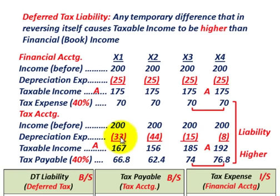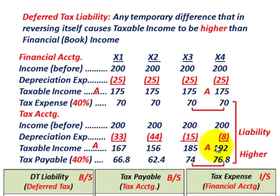Taxable income — income before expenses minus depreciation — comes to $167,000 in year one, $156,000 in year two, $185,000 in year three, and $192,000 in year four. Now for tax payable: in tax accounting, you refer to it as tax payable, versus tax expense in financial accounting.